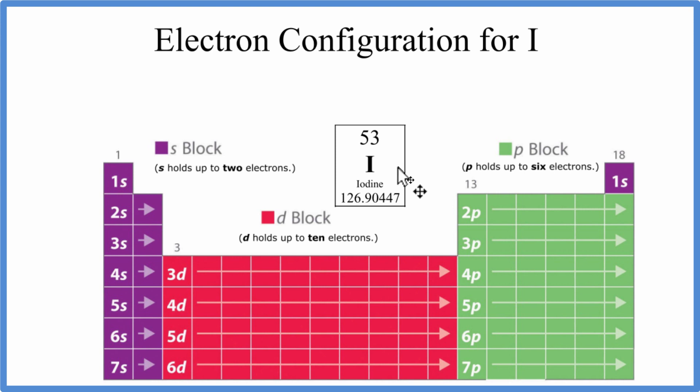With a neutral element like iodine as it's found on the periodic table, there's no plus or minus. This neutral element, the number of protons equals electrons. So we have 53 protons. That means we have 53 electrons to write the electron configuration for I.